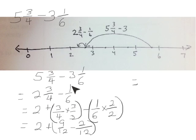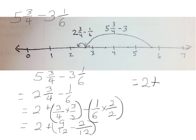I'm going to solve this by first doing 5 and 3 fourths take away 3, just as I did on the number line, giving 2 and 3 fourths. So I have 2 and 3 fourths take away 1 sixth: separating into 2 plus 3 fourths minus 1 sixth. I'm going to use a common unit of 12, since 12 is a multiple of both 4 and 6. 3 fourths times 3 thirds is 9 twelfths; 1 sixth times 2 halves is 2 twelfths. 9 twelfths take away 2 twelfths is 7 twelfths, so my answer is 2 and 7 twelfths.